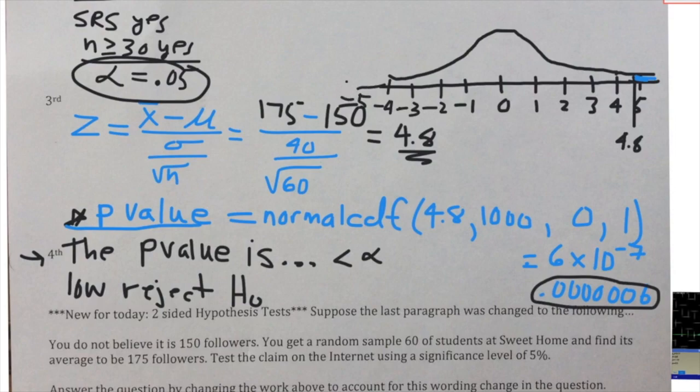What this ends up doing to our p-value is it gives us twice as much shading. So even though the z-score came out to be 4.8, in a two-sided test we also have to consider negative 4.8 just as likely as positive 4.8 for a z-score. You're going to be shading to the left and to the right.